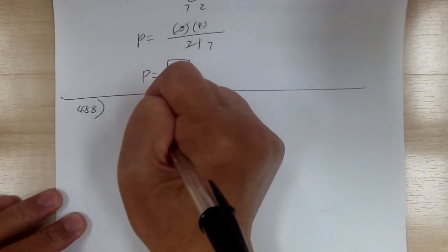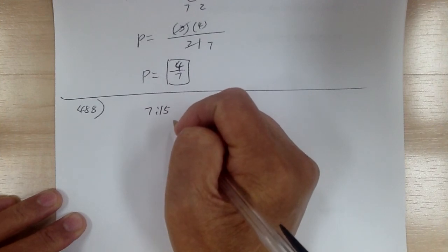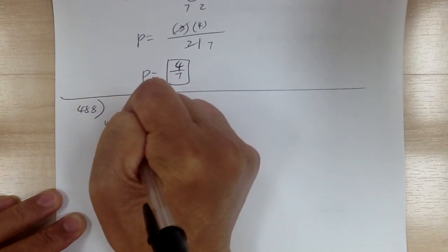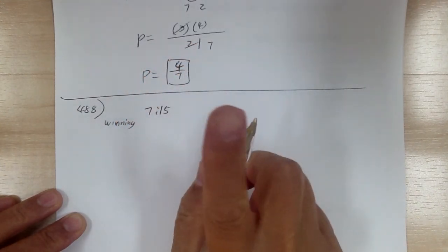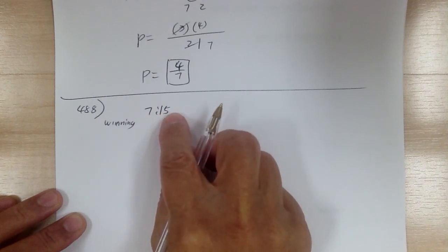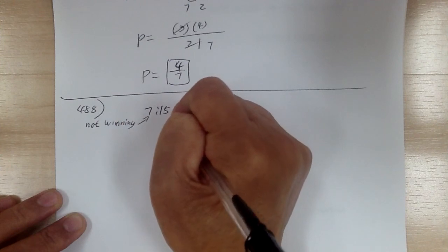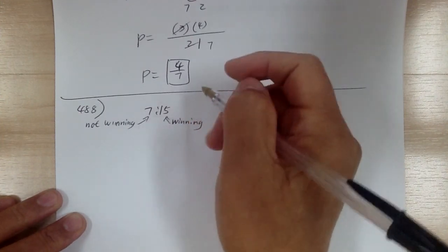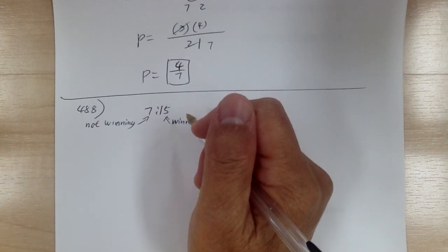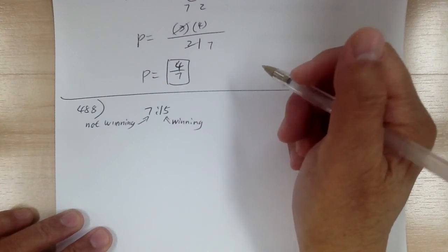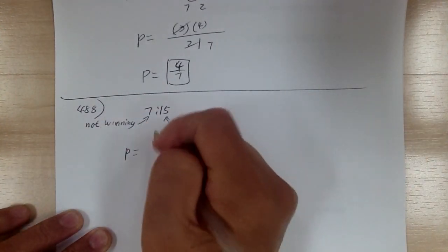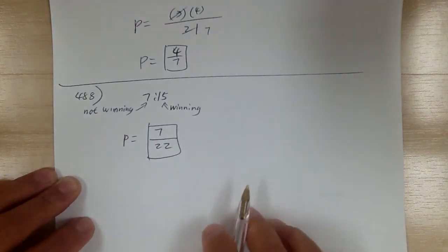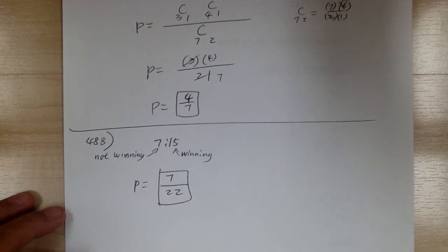The odds are 7 to 15 against winning. Remember, when talking about odds against, the first number is not happening and the second is happening. So not winning is 7, and winning is 15. What's the probability that a different horse will win? If another horse wins, that means this horse is not winning. So probability equals 7 — not winning — over the total, which is 22. And that's it for 488.